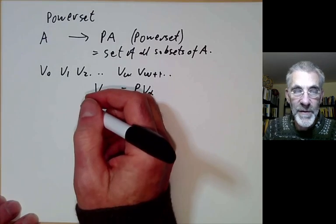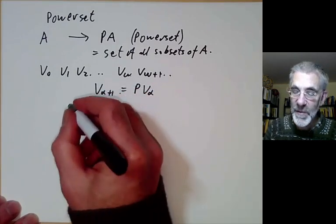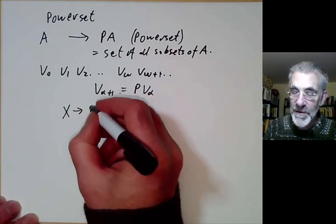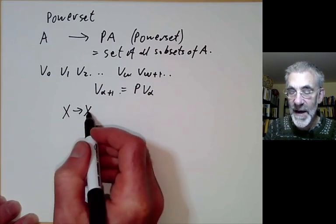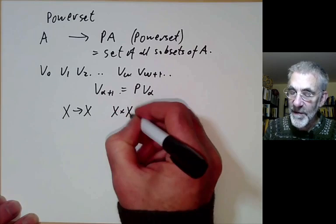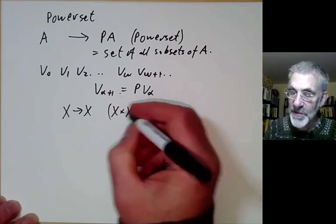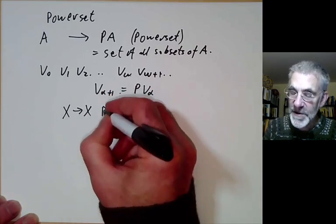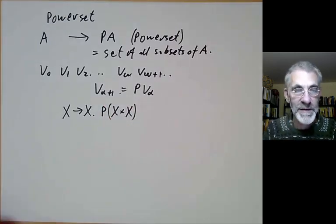And it's also used quite a lot when you define function spaces. For example if you've got a set and you want to look at the space of all functions from x to x you can think of this as being a subset of x times x in the usual way. So the space of all functions will be a subset of the power set of x times x.